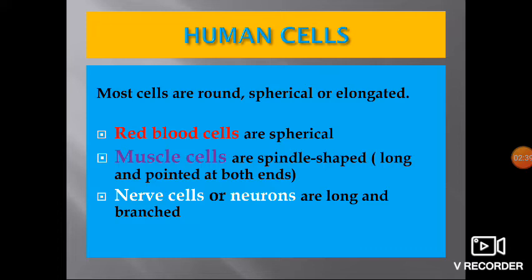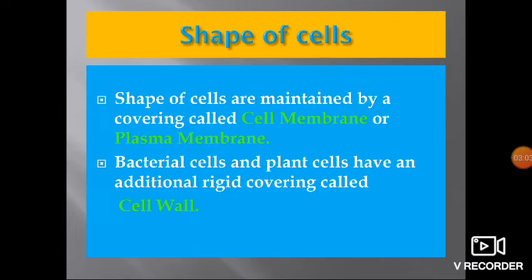Red blood cells (RBCs) are spherical. Muscle cells are spindle-shaped, meaning they are long and pointed at both ends. Nerve cells are long and branched. The shape of cells is maintained by a covering called the cell membrane or plasma membrane, also called the plasmalemma. Bacterial cells and plant cells have an additional rigid covering outer to the plasma membrane called the cell wall.